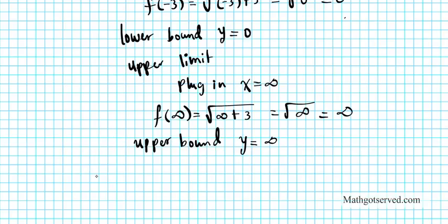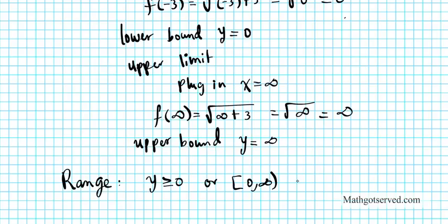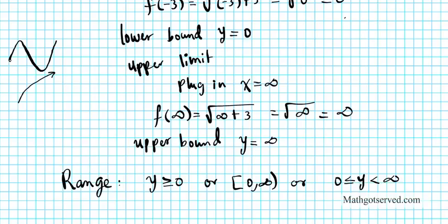So the range can be written as y ≥ 0, or from 0 to infinity as [0, ∞), or as 0 ≤ y < ∞. Remember the range is a bit technical — for this graph, since it increases forever, the lower and upper bounds of the domain suffice. If the graph were going up and then down and then up again, we'd have to find where the max and min are and factor that into the calculations. That's why it's good to have a calculator to know the nature of the graph.